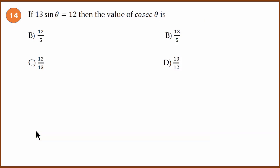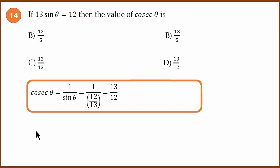Question 14: Simple definition question. 13 sin θ = 12. What is the value of cosec θ? Cosec θ is defined as 1/sin θ. Sin θ is given by 12/13. If you substitute that, you get 1 ÷ (12/13). When it is in this form, 13 goes to the numerator. The answer is 13/12. D is the answer.